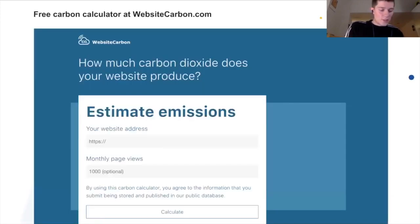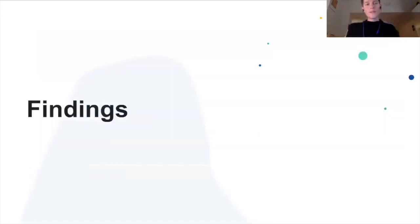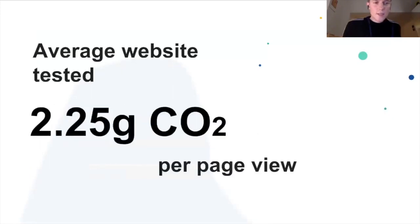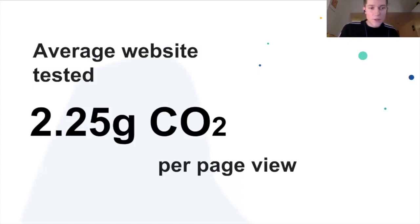This is what the calculator looks like — it's online, and we've had around five thousand sites go through it, so we've got some interesting findings. The average website tested was measured at 2.25 grams of CO2 per page view.